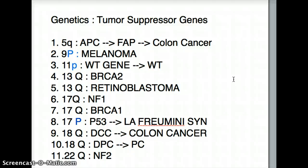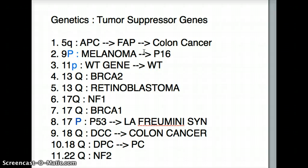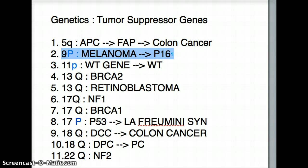That is followed by 9P, which causes melanoma. The tumor suppressor gene for 9P is P16. This can be a little challenging to remember because the chromosome number is 9P but the tumor suppressor gene also has a number — it's P16. So let's call it the weird one, the one that has a lot of information going on.